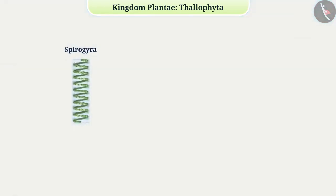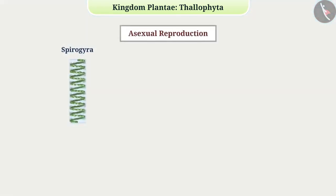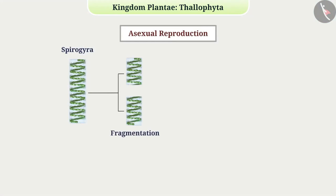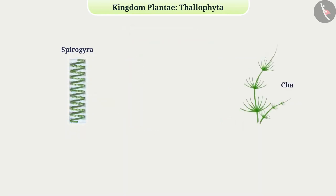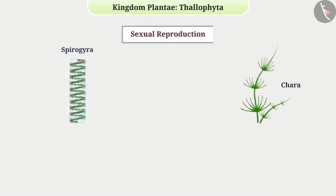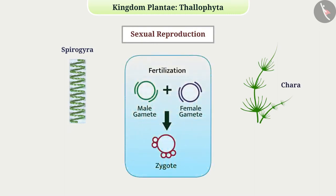Thallophytes have various methods of reproduction. In Spirogyra, asexual reproduction occurs by fragmentation. The asexual reproduction in Chlamydomonas results from the origin of various spores called zoospores. In Spirogyra, Chara, etc., sexual reproduction occurs by fertilization of gametes.